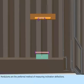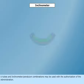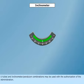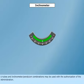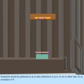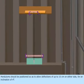Pendulums are the preferred method of measuring inclination deflections. U-tubes and inclinometer or pendulum combinations may be used with the authorization of the administration. Pendulums should be positioned so as to allow deflections of up to 15 cm on either side for an inclination of 4 degrees.